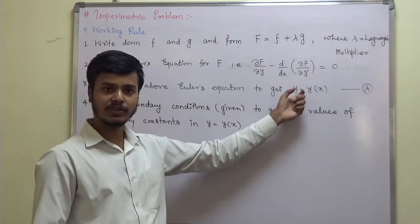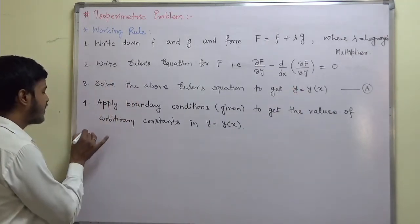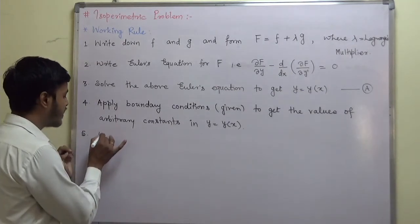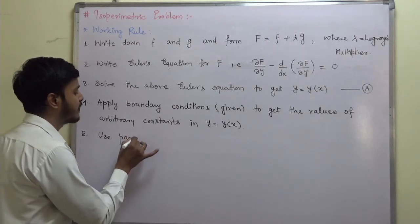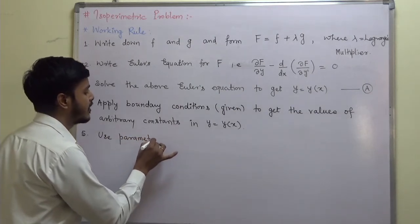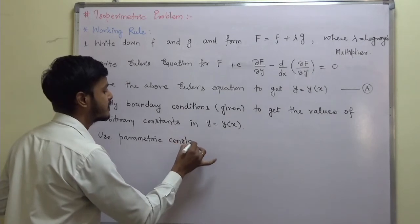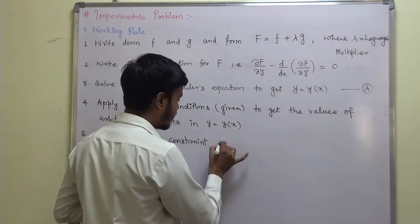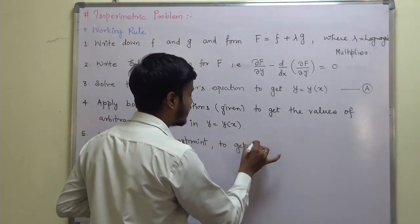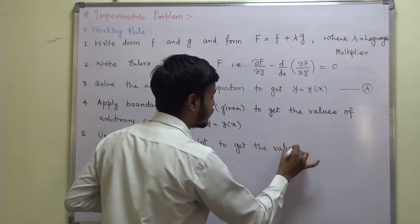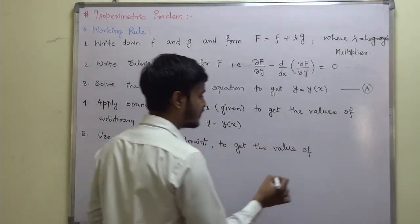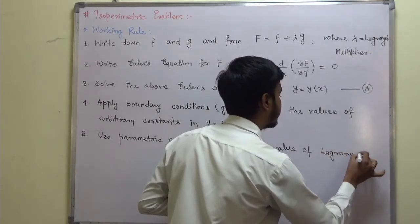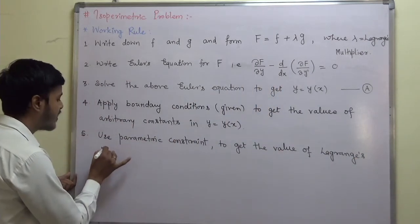The fifth step is to use the isoperimetric constraint. Substitute y of x into the isoperimetric constraint and solve to get the value of the Lagrange multiplier, lambda.